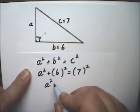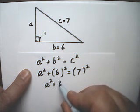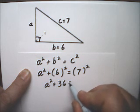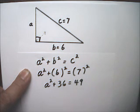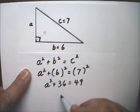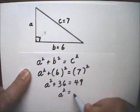A squared plus 6 times 6 is 36. 7 times 7 is 49. So now I subtract 36 from both sides. And A squared equals 13.